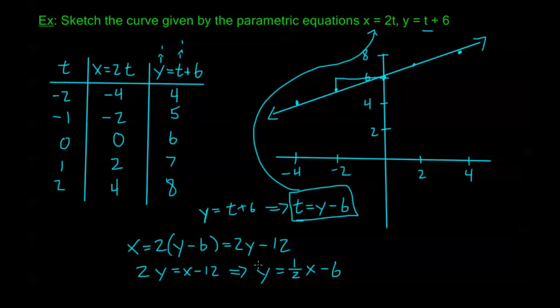And actually I have this backwards, I've made a mistake somewhere. Oh, I have x plus 12. 2y equals x plus 12. I just brought this 12 to the other side, so it should be plus 6.